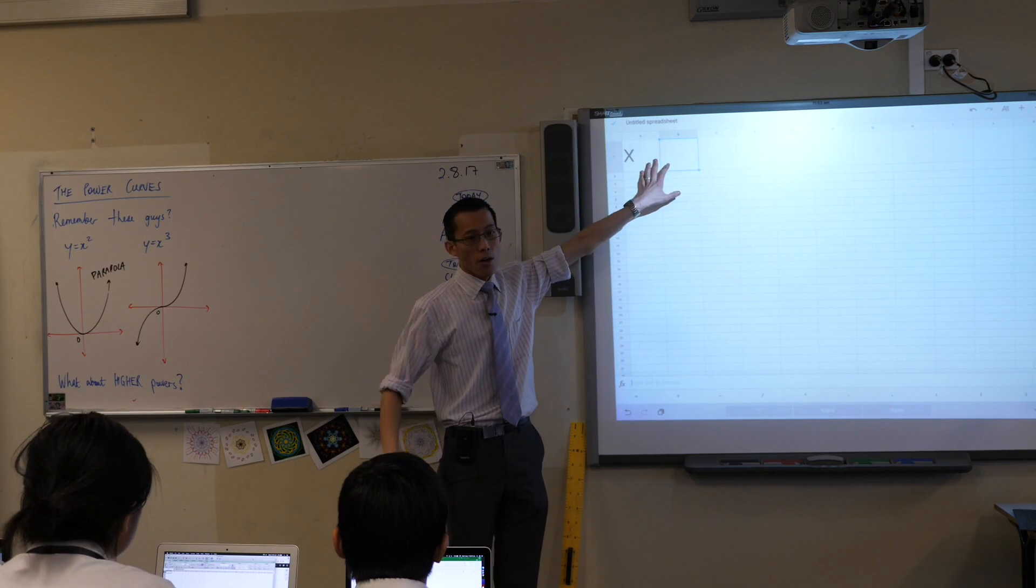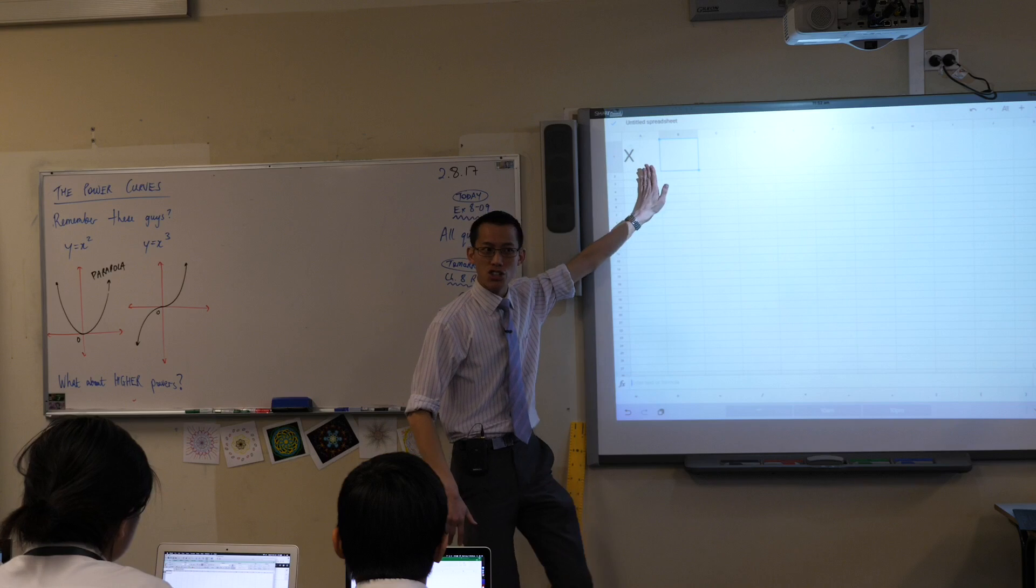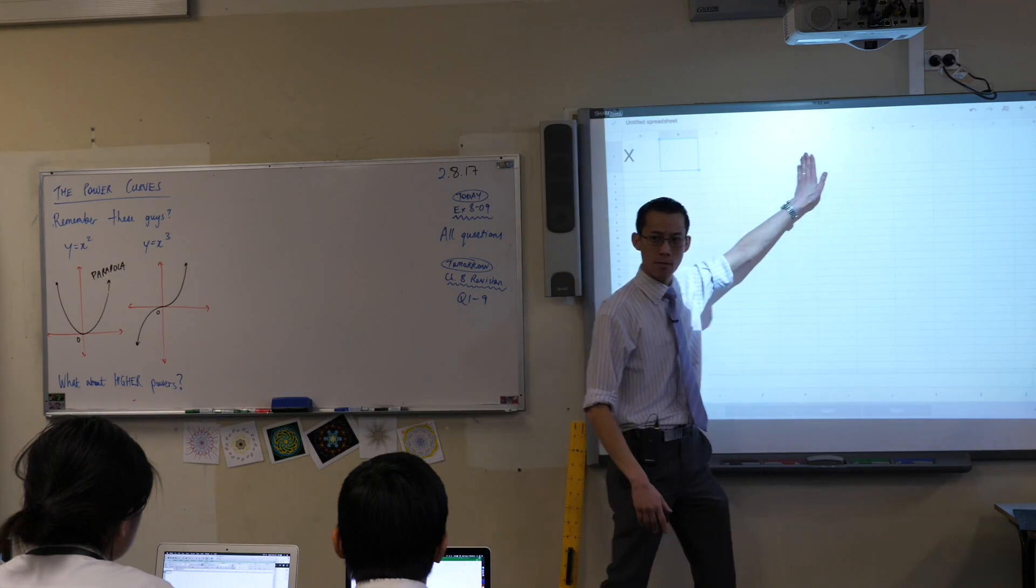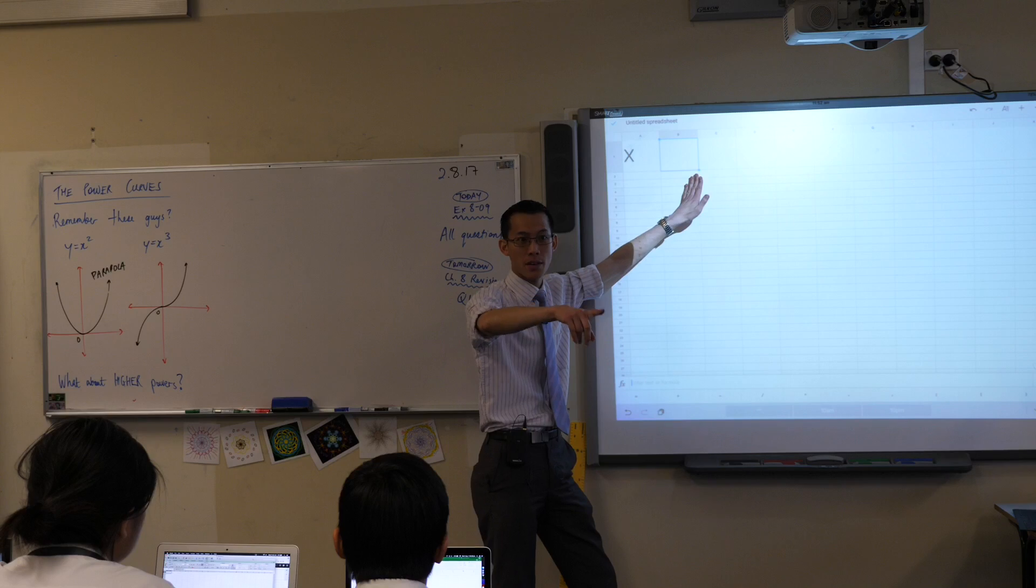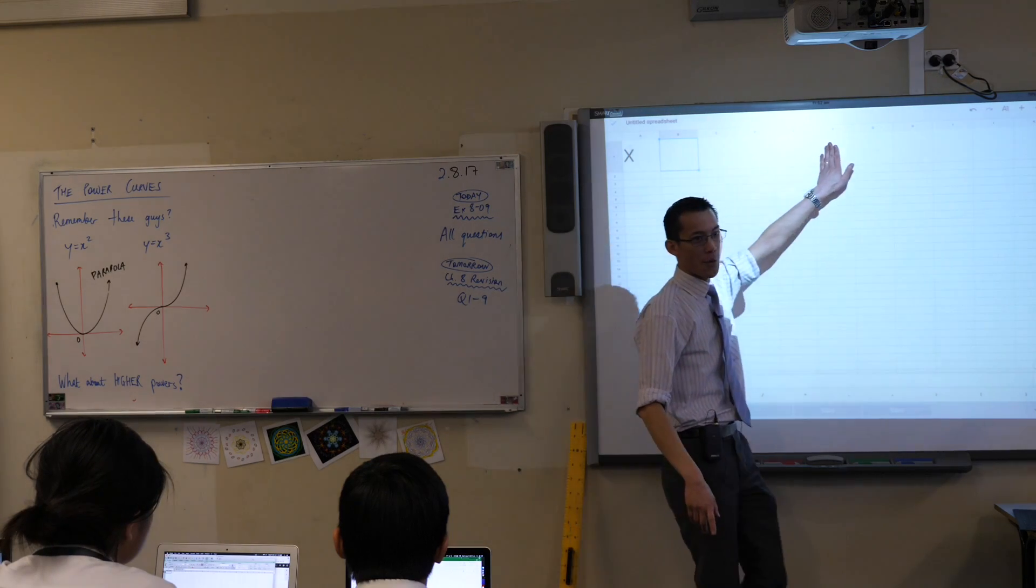Here's what we're going to start with. For the cubic curve, do you remember I asked you to do seven values across here? Do you remember what the seven were? Minus three, minus two, minus one, zero, one, two, and three. Very good. Negative three all the way up to three.